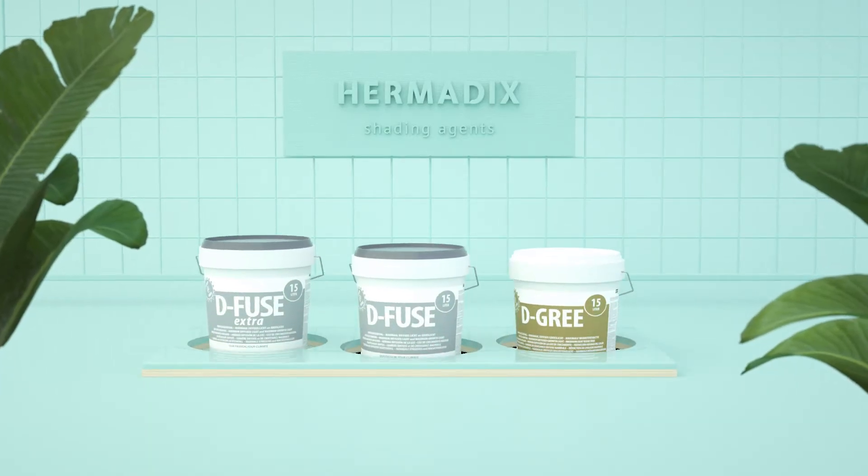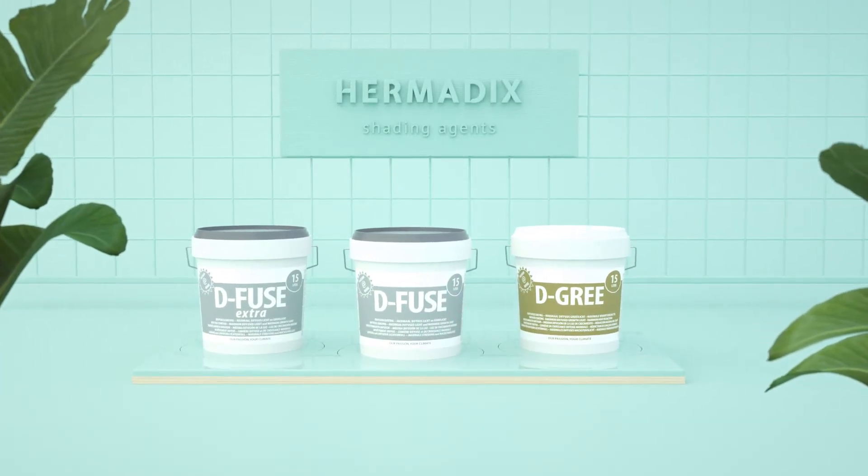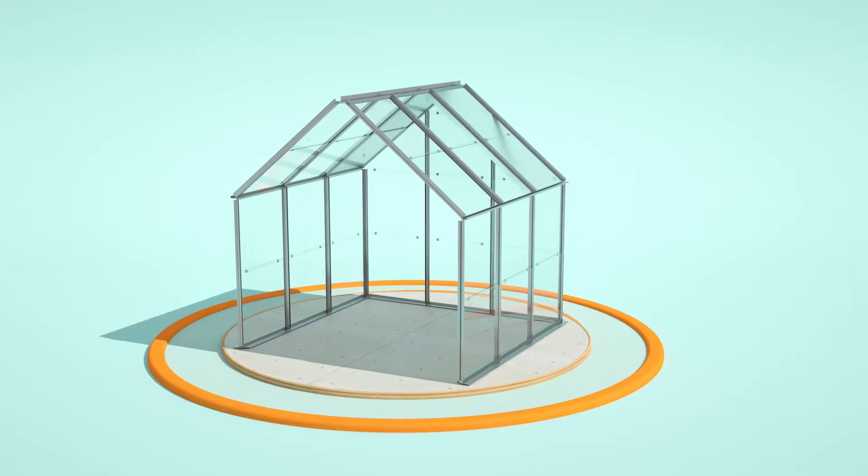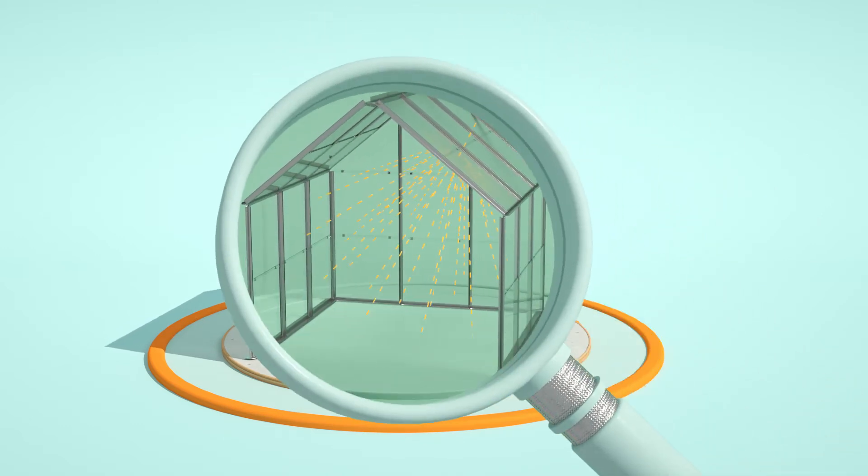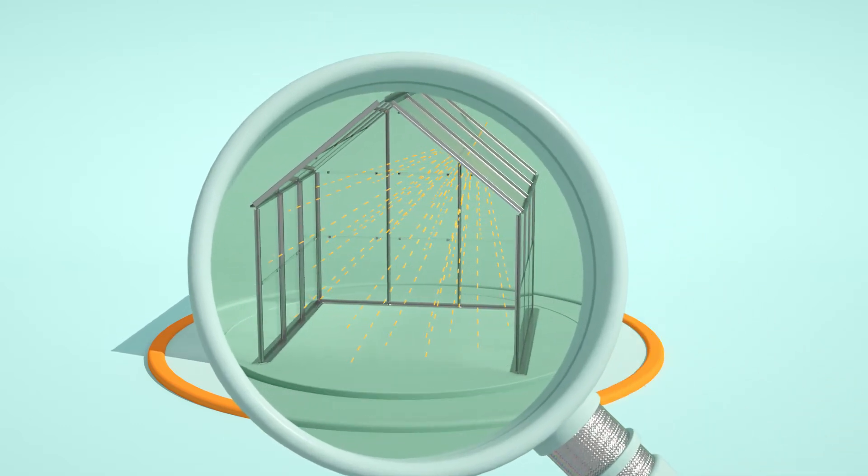There's a better solution, using a Hermedix diffuse coating. By using diffuse, sunlight is scattered both horizontally and vertically, giving much better and even light distribution.